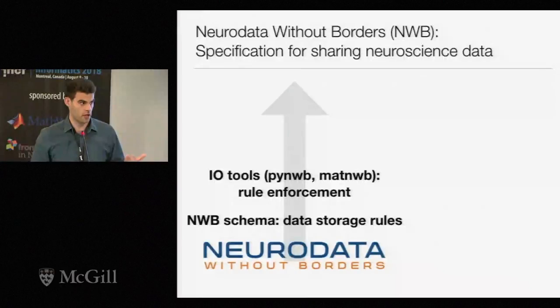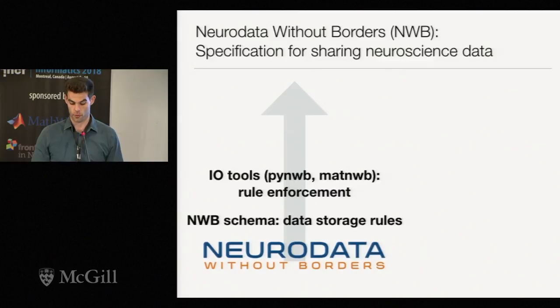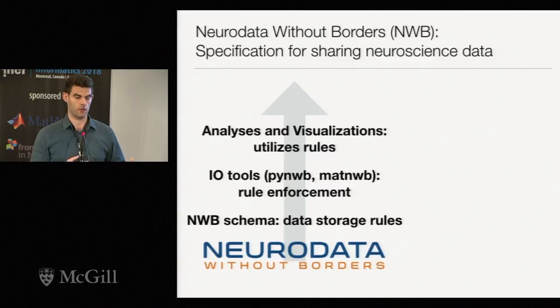If you're a theorist and you're usually getting data from other labs, you know how hard it can be to understand someone else's data structure. The idea is to establish a set of rules that we need when transporting and archiving data. So we're building PyNWB and MatNWB — tools in Python and MATLAB to bring data from various formats into NeuroData Without Borders. Once we have data in this format, we can use the IO tools to build visualization and analysis tools that will be generalizable across labs.